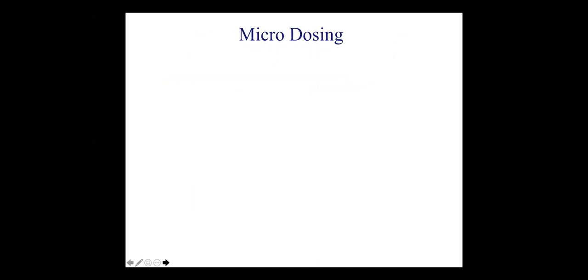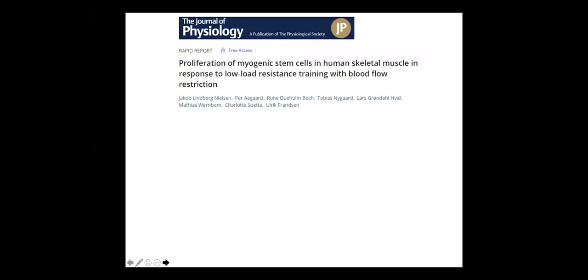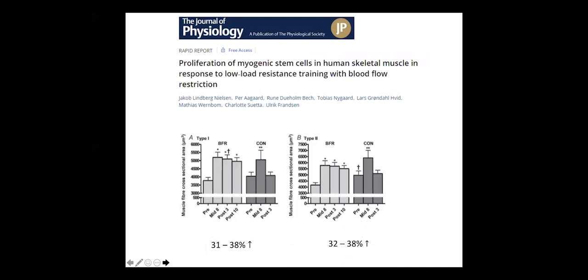Other opportunities include the ability to perform periods of micro-dosing — for example, increasing the frequency of training for a short period of time. Due to the low load nature of blood flow restriction and low mechanical stress, it can be applied once or twice per day for a short period to induce rapid gains. The Nielsen study demonstrated large changes in muscle mass following 23 sessions in just 19 days, with an increase in muscle fibre cross-sectional area of up to 38 percent in as little as 8 days, maintained until the end of the study and up to 10 days post-training. This was supplemented with a 10 percent increase in strength. Despite training lasting approximately three weeks, adaptations occurred after just one week.